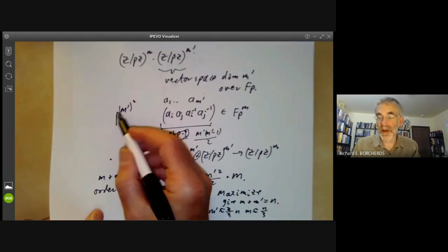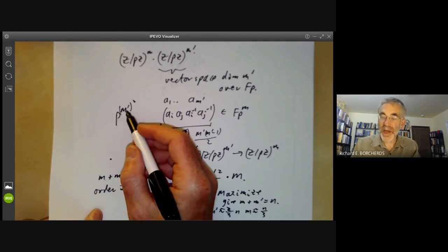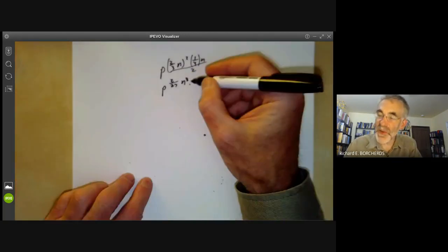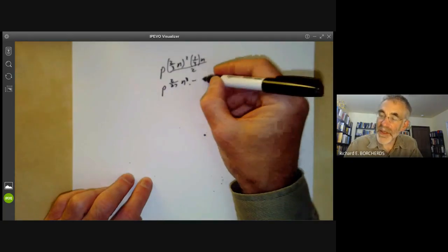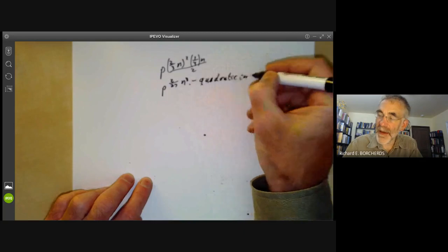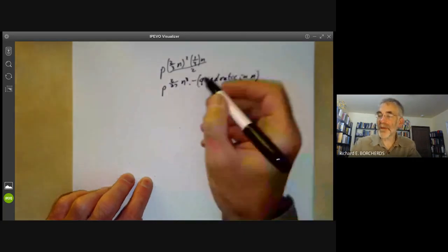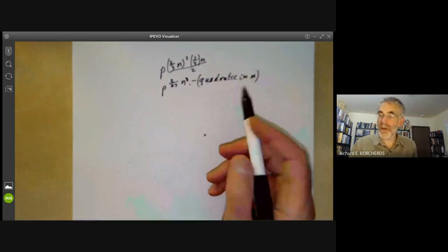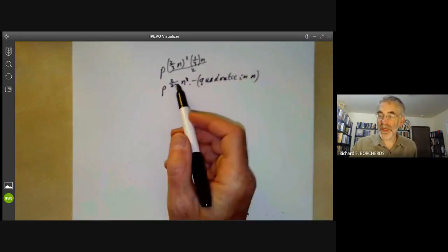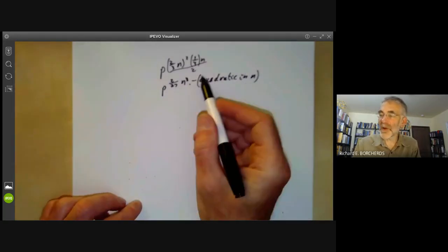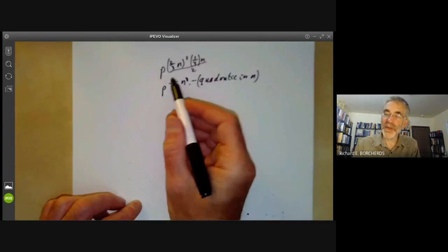That's the number of matrices of size m prime by m prime, each of whose elements is in the finite field of order p. This is going to be at most quadratic in n. So we should really take p to the 2/27 n cubed minus something quadratic in n to account for the fact that we've constructed many of these groups several times.